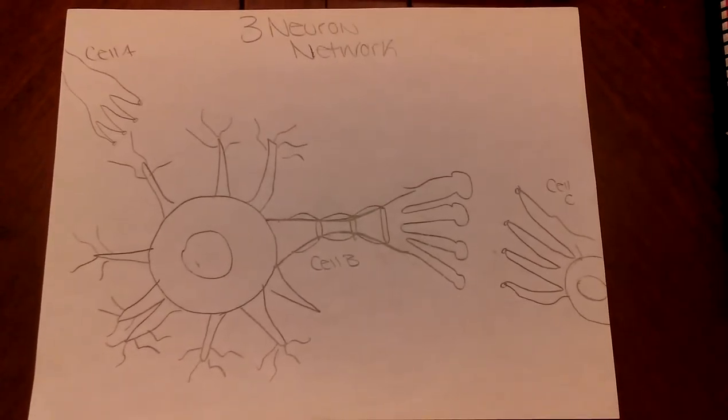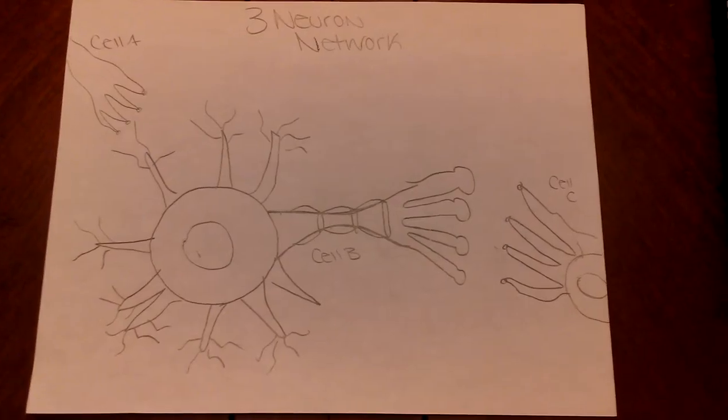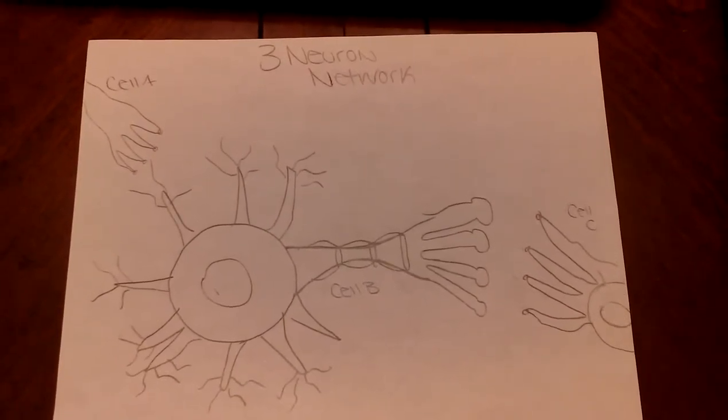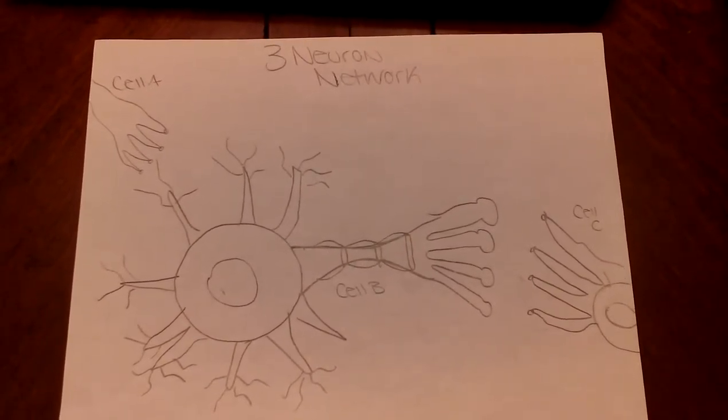An event happens in cell A causing a neurotransmitter molecule to travel across the synapse of cell A and cell B. Once the neurotransmitter molecule is in the synapse, there are four possible outcomes for the neurotransmitter molecule.